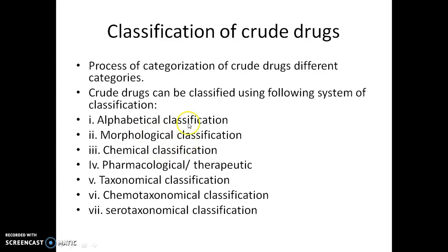Each and every classification system has its own merits and demerits. The classification systems are: alphabetical classification, morphological classification, chemical classification, pharmacological or therapeutic classification, taxonomical classification, chemo-taxonomical classification, and sero-taxonomical classification.